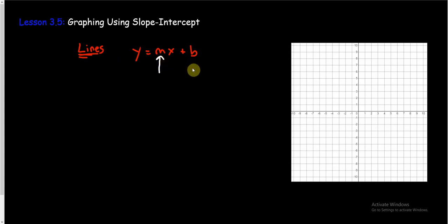Now these two pieces, the m and the b, are going to be numbers. The y and the x are going to obviously stay y and x. So the m and the b are going to be numbers. And what they are, we already know what m is. That's the slope.